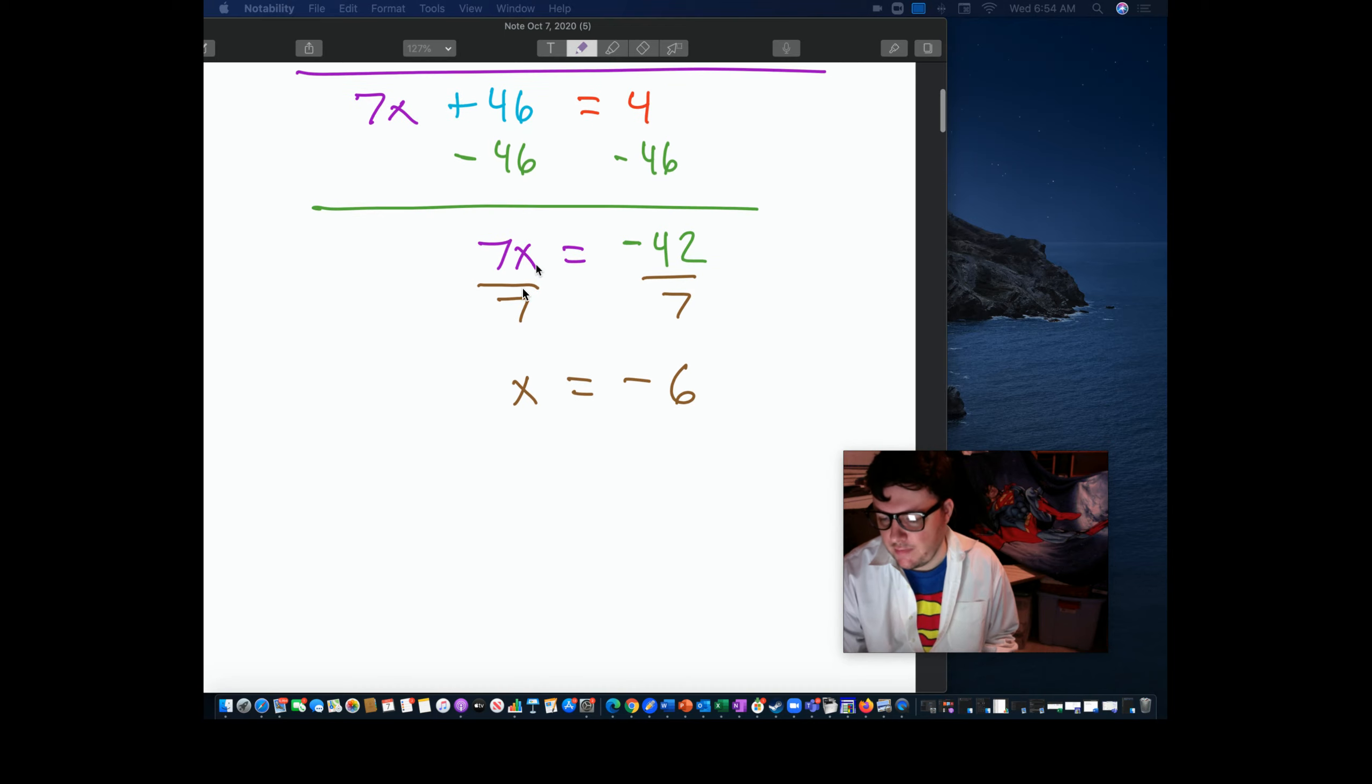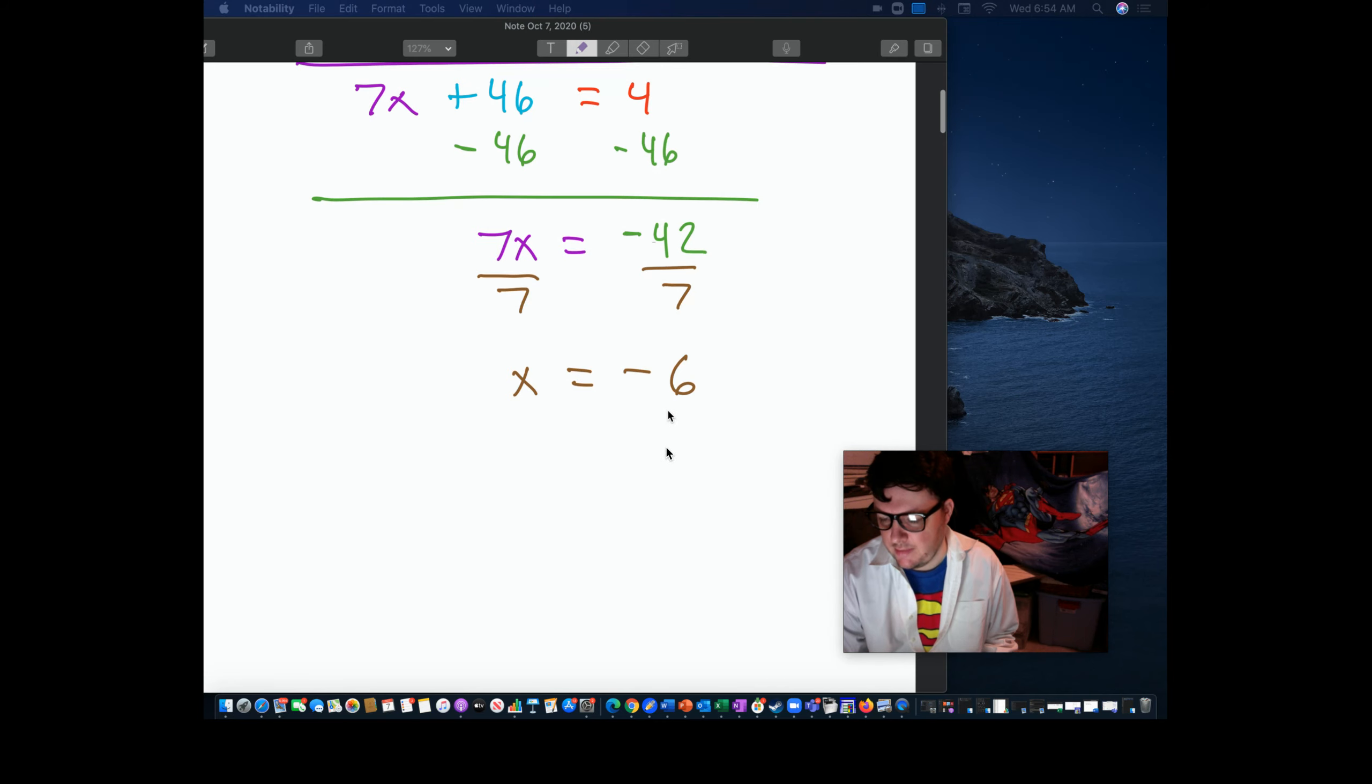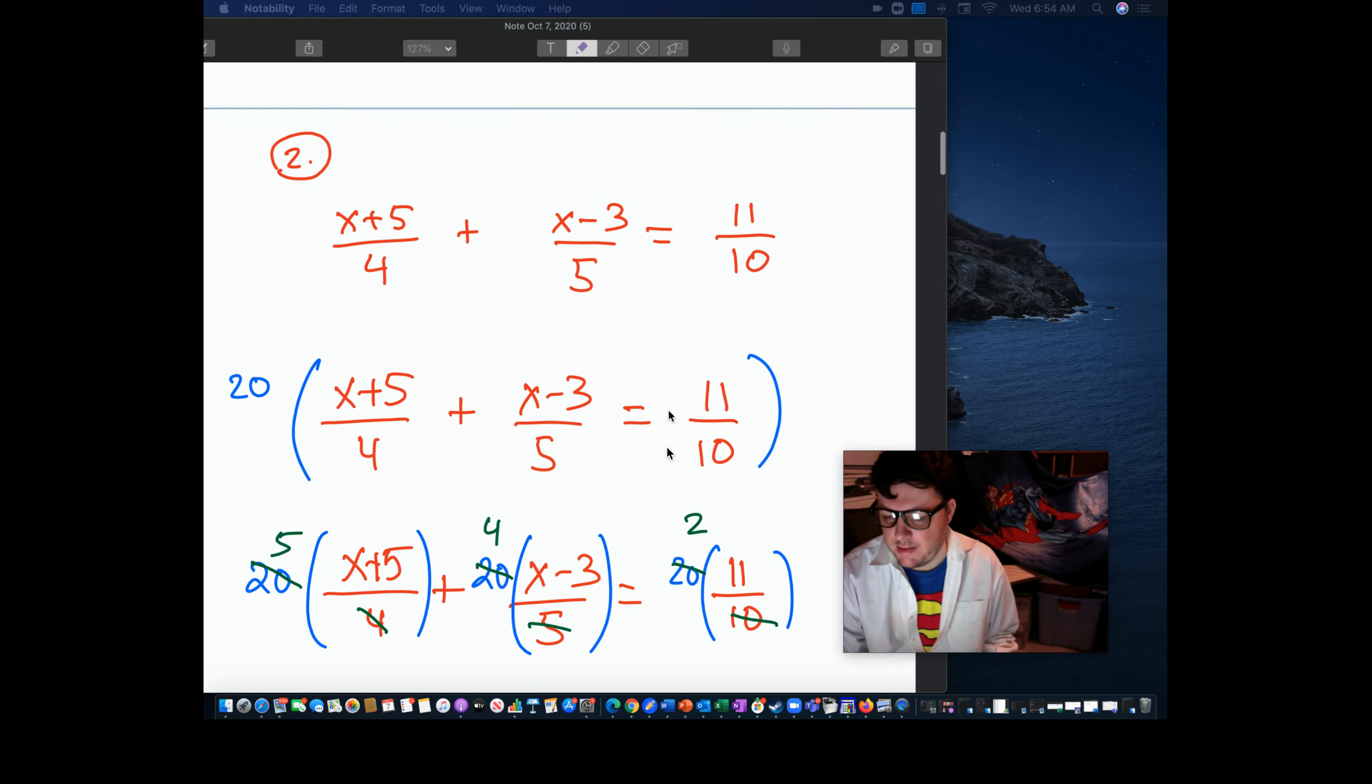To finish it off, 7x means seven times x, opposite multiplication, division, divided by 7, divided by 7, x is negative 6. On to the next one.